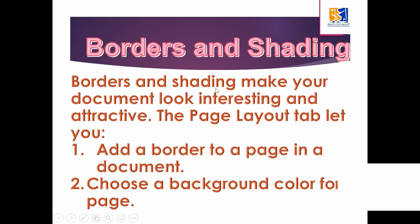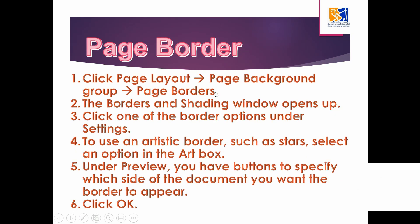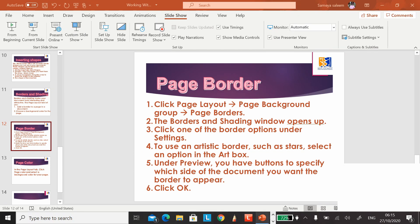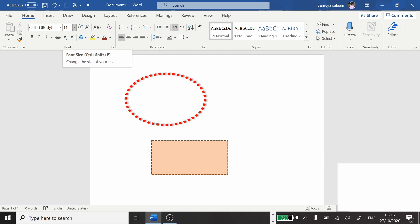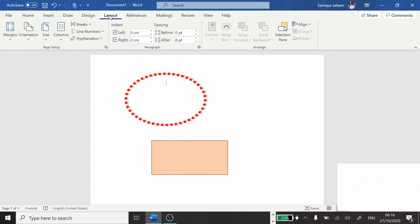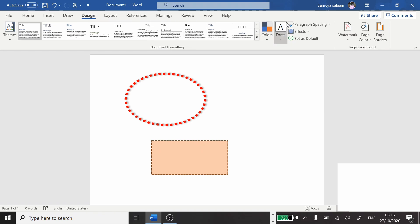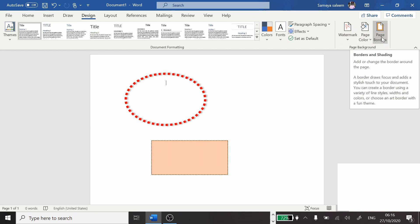Borders and shading make your document look interesting and attractive. The page layout tab lets you add a border to a page or choose a background color. To add a page border: click Page Layout, Page Background group, Page Borders. Note that in newer versions of Microsoft Word, borders are found under the Design tab. Click Design and you will see Watermark, Page Color, and Page Borders at the end.